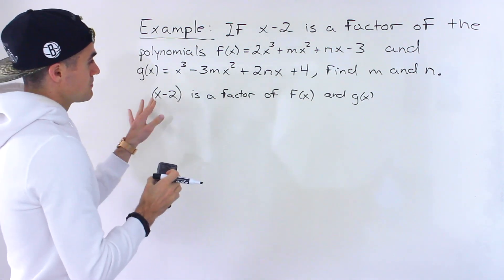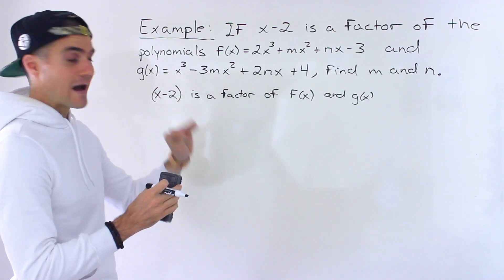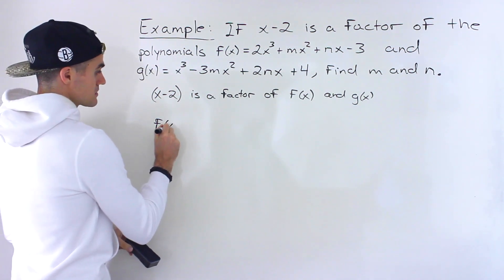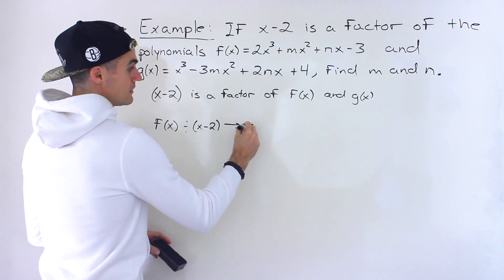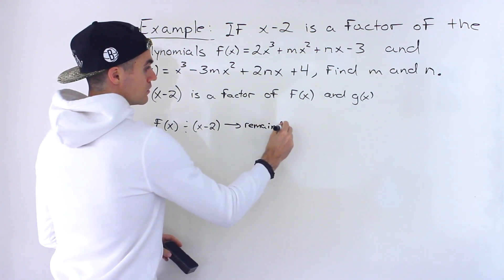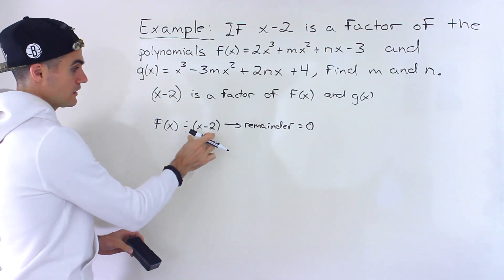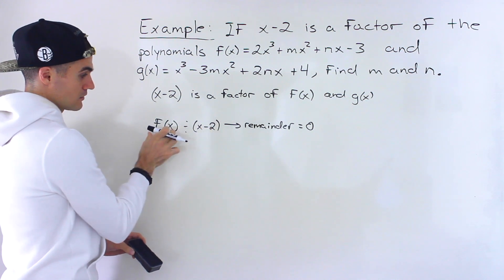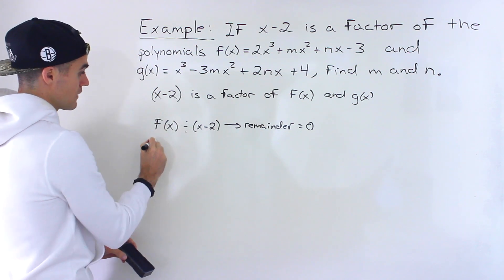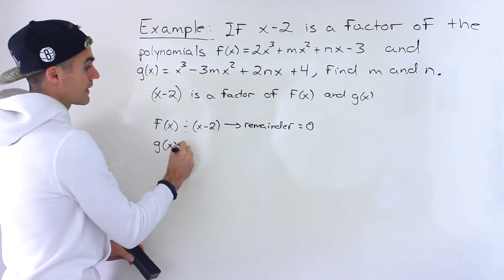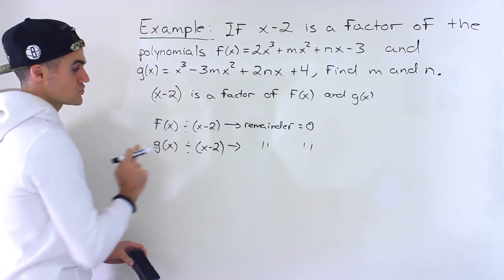What does this mean? It also means that if we take those polynomials and divide them — so if we take f of x and divide it by x minus 2 — the remainder would equal 0. By the factor theorem, if something is a factor of a polynomial, if you divide that polynomial by that factor, the remainder is going to be 0. Same thing with g of x — x minus 2 is a factor of both, so the remainder would be 0 for g of x as well.